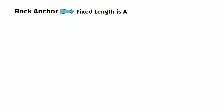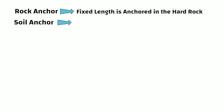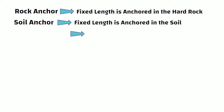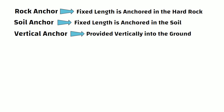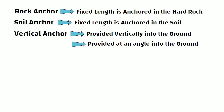In case of rock anchors, the fixed length is anchored in the hard rock, whereas in case of soil anchors, the fixed length is anchored in the soil. The anchors which are provided vertically into the ground are called vertical anchors, and the anchors which are provided at an angle into the ground are called inclined anchors.